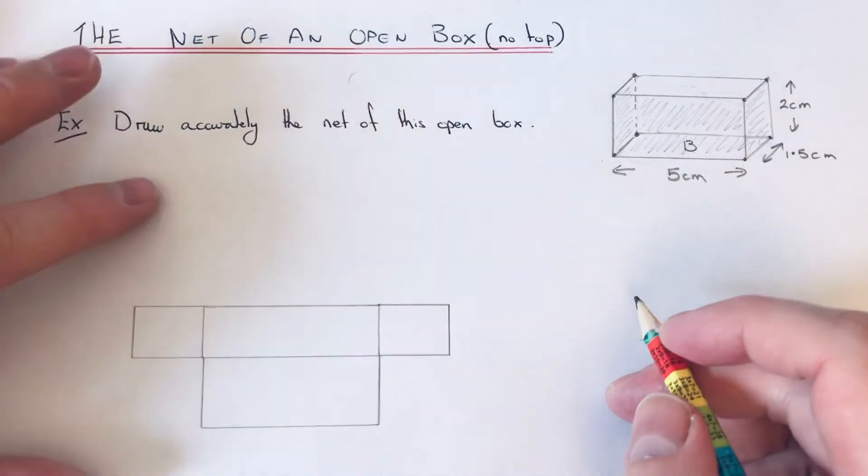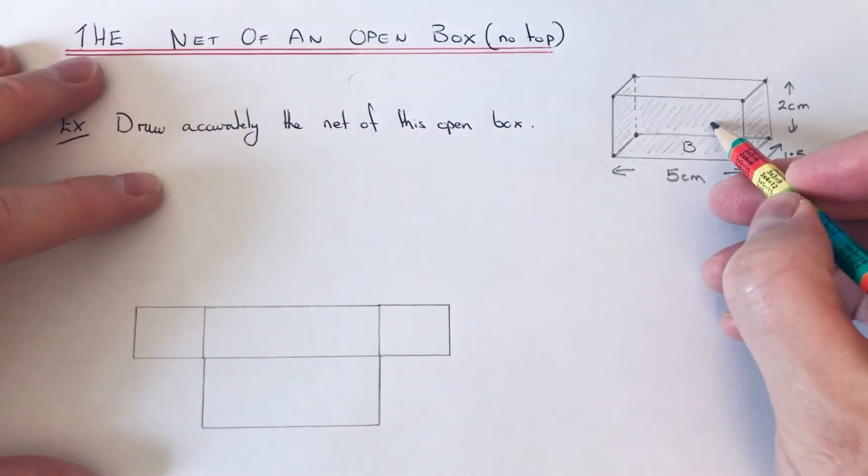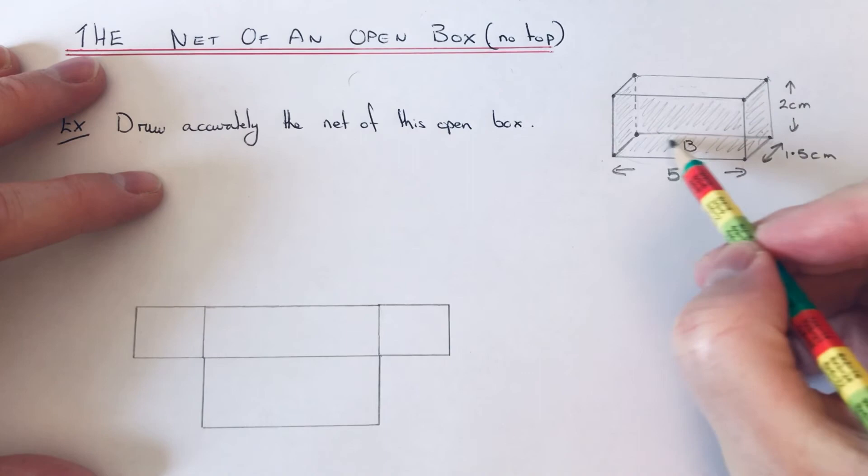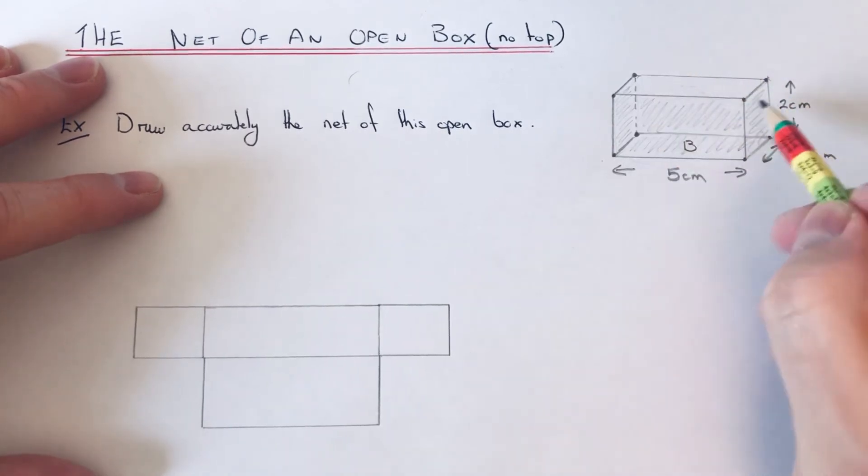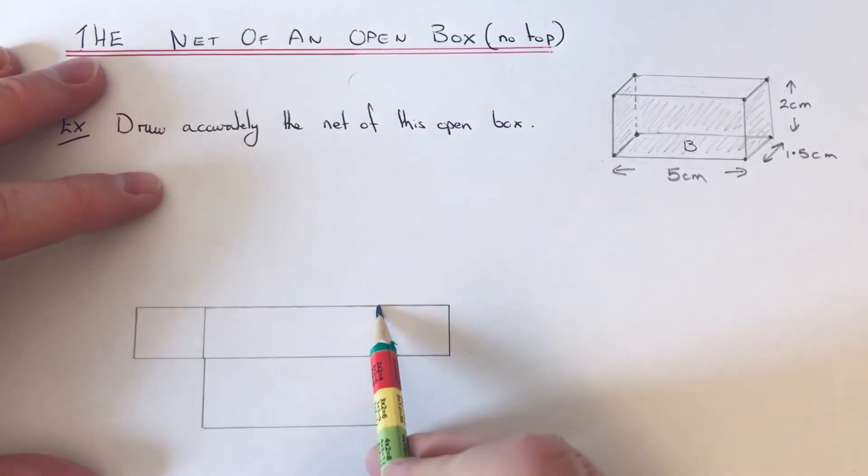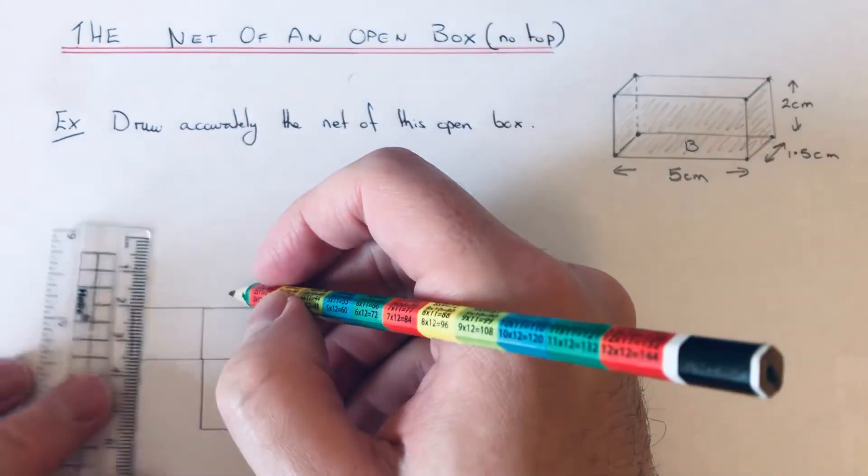And then we just need to do the same for the one at the back, so again it's 5 by 2. We've already got the 5 centimeters there, so just need to go out 2 centimeters.